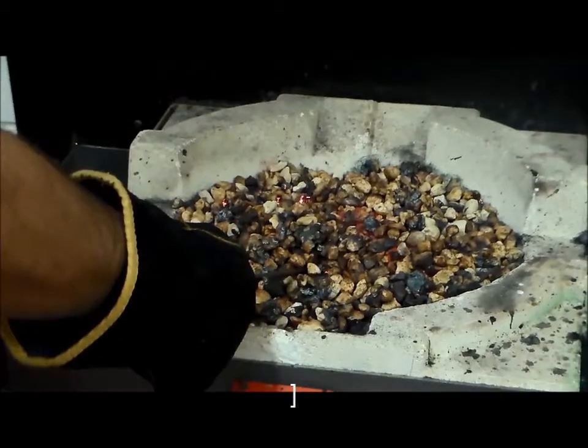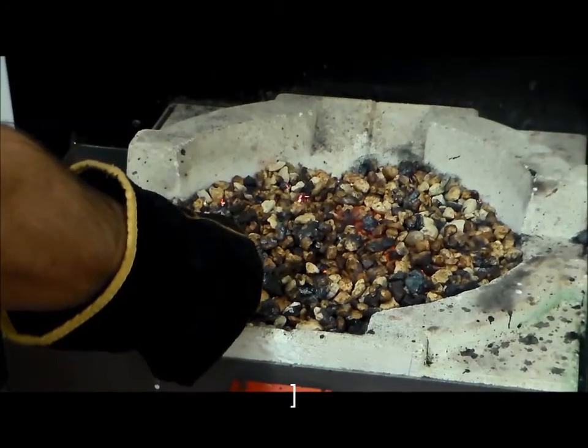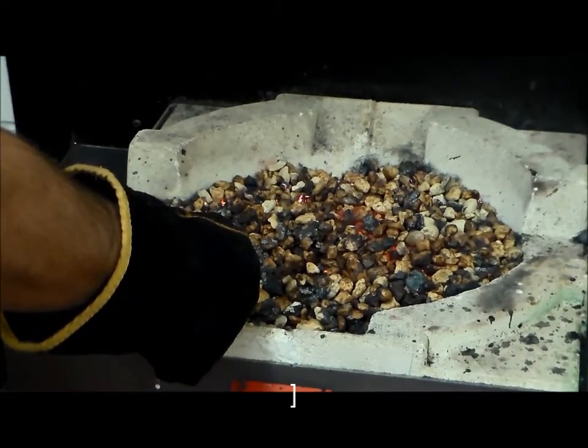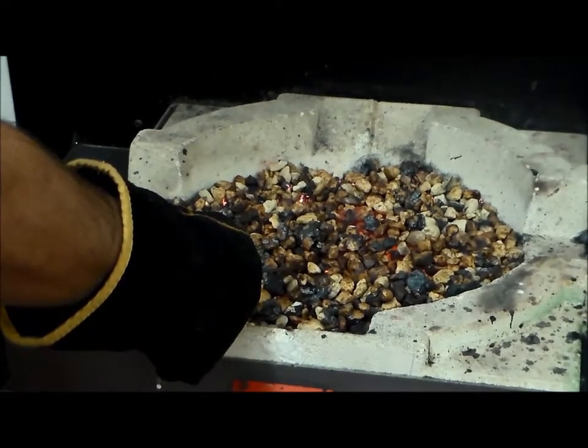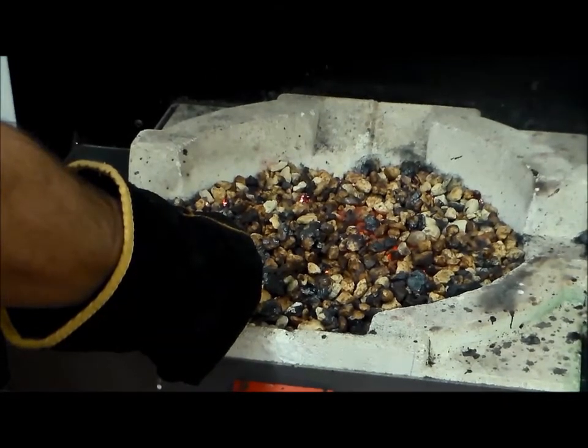We've put our mild steel strip in until it's a dull red heat. We're now going to take it out and use the former or jig to bend it to shape.